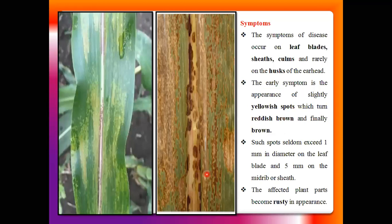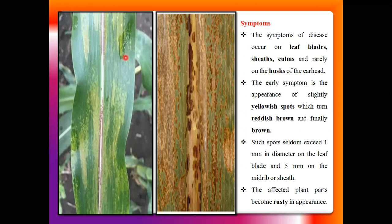This pathogen infects the leaf portion, leaf blade portion, leaf sheath portion, culm portion, and also the husk of the ear. This fungus mainly attacks or infects all the aerial plant parts of the maize plants. Initially, symptoms are seen on the leaf portion. The pathogen develops symptoms firstly on the lower side of the leaf. Yellowish small spots are seen on the lower side of the maize leaf.